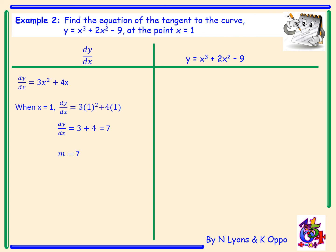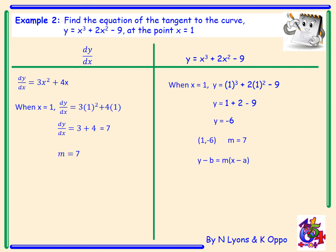We now need to find a y coordinate, so we put x equals 1 into our curve's original equation: 1 cubed plus 2 times 1 squared minus 9. 1 plus 2 take away 9 gives an answer of minus 6. We now have a coordinate point on our tangent: (1, -6), and we know our gradient is 7. Inserting into y minus b equals m bracket x minus a gives y plus 6 equals 7 bracket x minus 1. Expanding the right hand side gives 7x minus 7, which rearranges to give the equation of the tangent as 7x minus y equals 8.